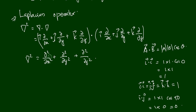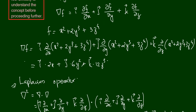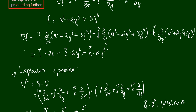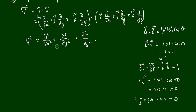Unlike the del operator, del squared contains no unit vectors, so it is not a vector operator. The del operator acting on a scalar function gives a vector, but del squared acting on a scalar function gives a scalar function only. Let us now see how del squared acts on a function.